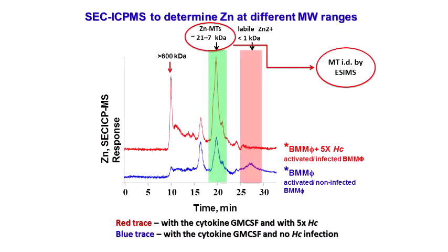ZIP2 in this case is in activated bone marrow. But without activation, it's not going to produce any of these ZIP proteins — you activate it and infect it, and you can see the difference easily. Using size exclusion ICP-MS to determine zinc at different molecular weight ranges, zinc occurs at different ranges. At around 20, we determined this was a zinc metallothionine by molecular mass spectroscopy. Under each size exclusion peak there are many things — it's not the best chromatography to resolve individual species; it tells you that in this molecular weight range, there are proteins and zinc.